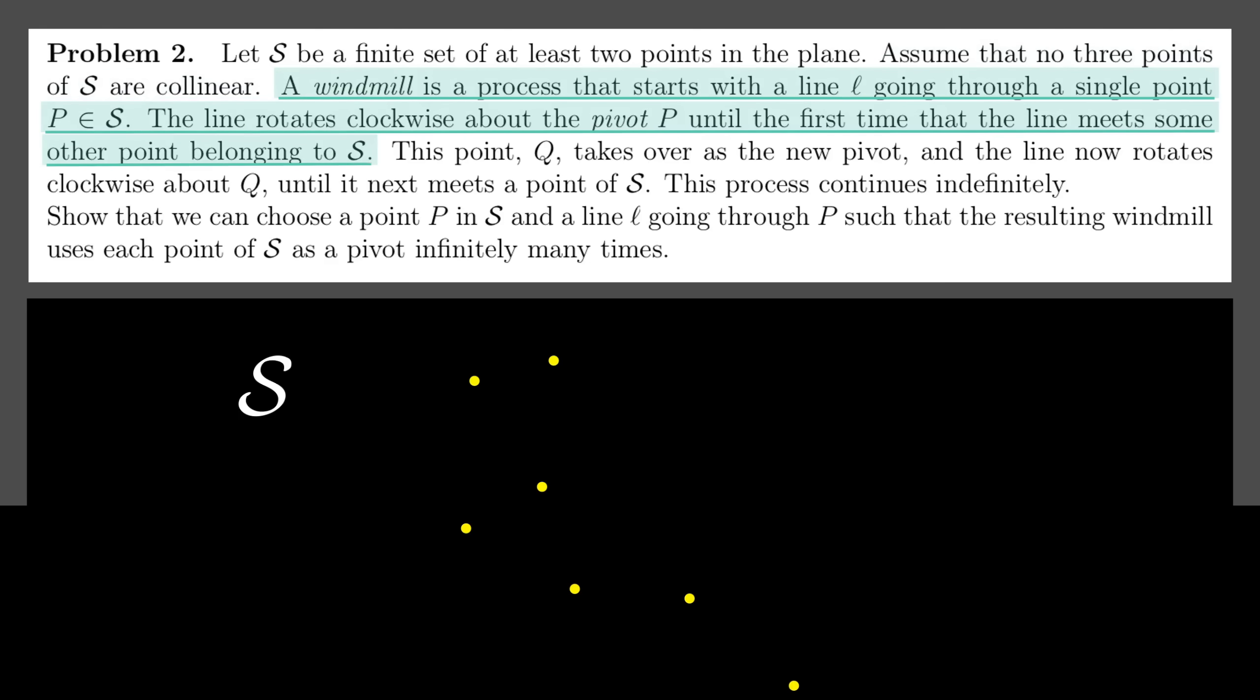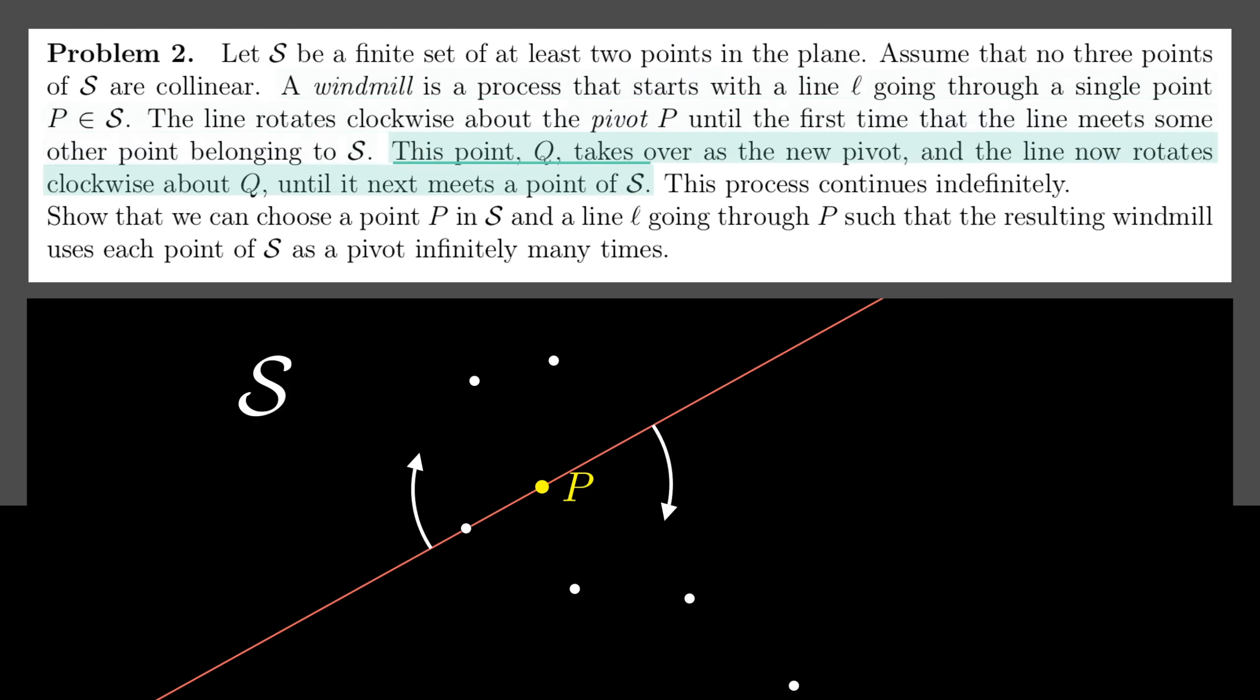A windmill is a process that starts with the line l going through a single point P in S. The line rotates clockwise around the pivot P until the first time that that line meets some other point belonging to S. And again, while reading, it's helpful to draw out an example. So we've got this line that's pivoting around some point until it hits another. This point, Q, takes over as the new pivot, and the line now rotates clockwise about Q until it next meets a point of S. This process continues indefinitely.